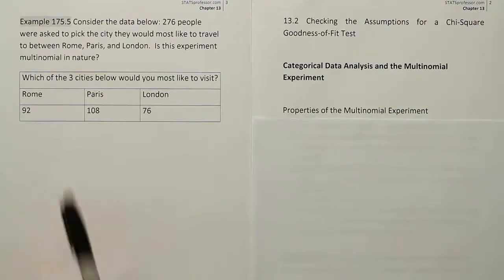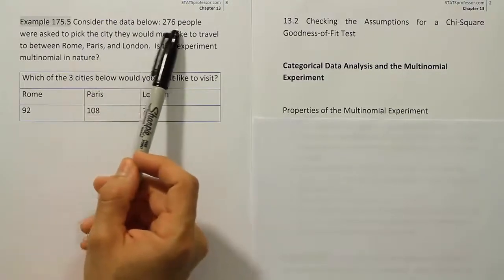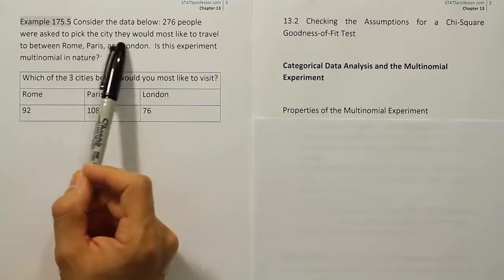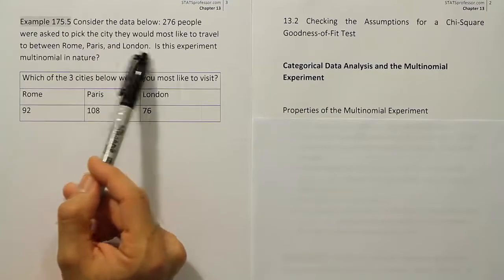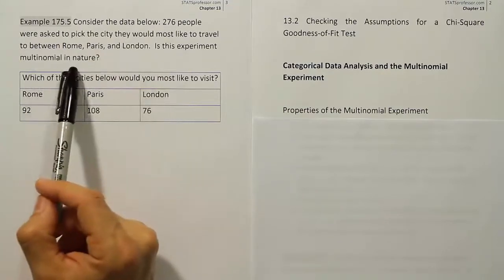Example 175.5. Consider the data below. 276 people were asked to pick the city they would most like to travel to between Rome, Paris, and London. Is this experiment multinomial in nature?